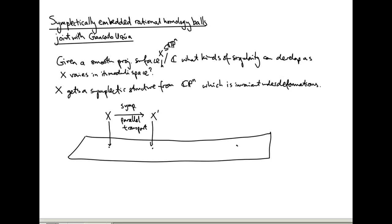Suppose I have a singular variety somewhere in this moduli space — some choice of equations gives me a singularity. I could try symplectically parallel transporting from a smooth fiber to the singular fiber. I run into some problems because the singular fiber doesn't even have to be diffeomorphic to the smooth fibers, but away from the singularity, the topology looks the same.